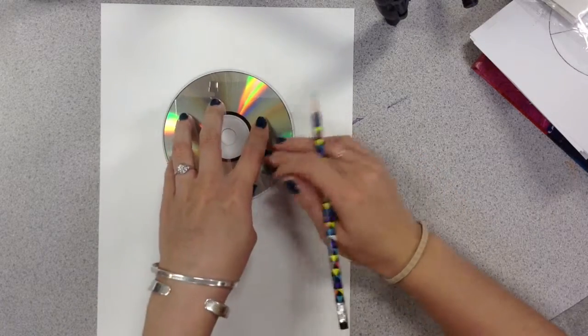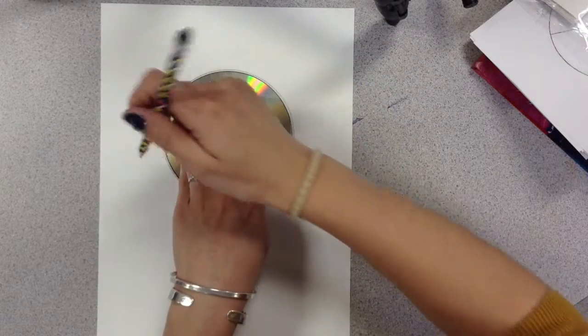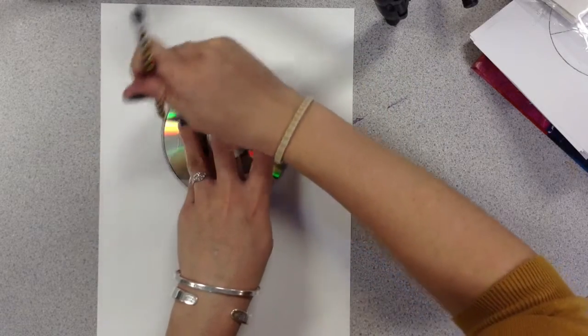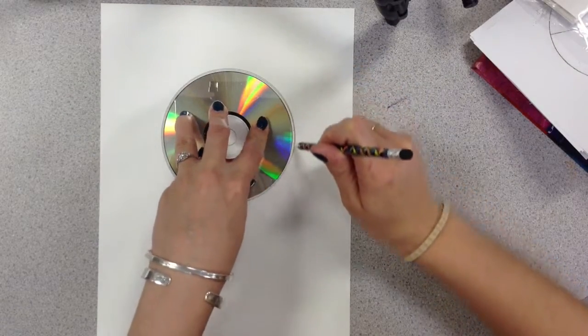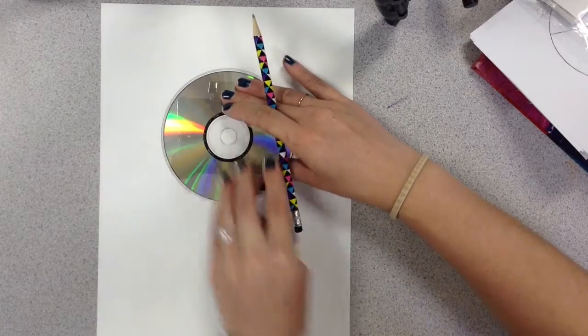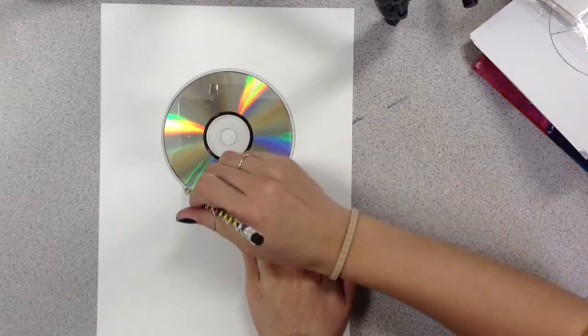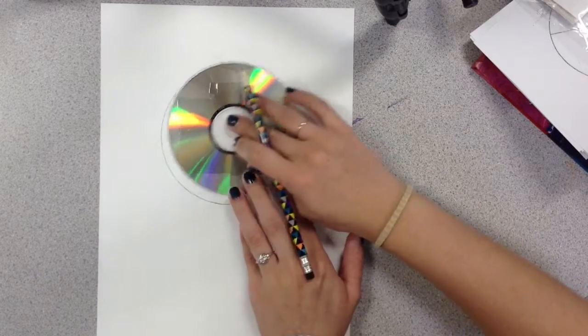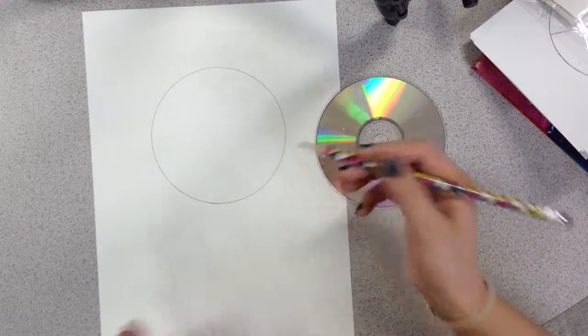Hold it down with one hand, and the other hand that you write with is going to trace around the outside nicely, smoothly. And if I can't fit anymore, I stop, pick up my pencil, move my hand. I don't want that CD to move, so I've got to be careful. And if I've done it right, it's a nice, perfect circle.